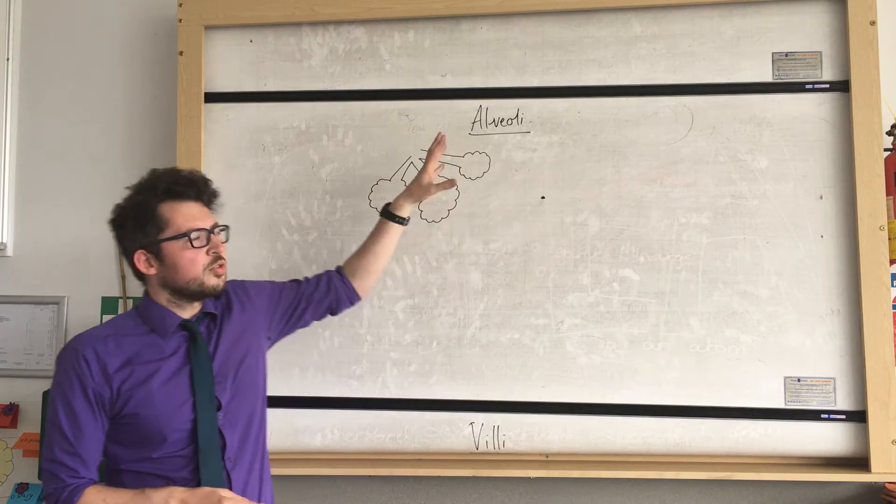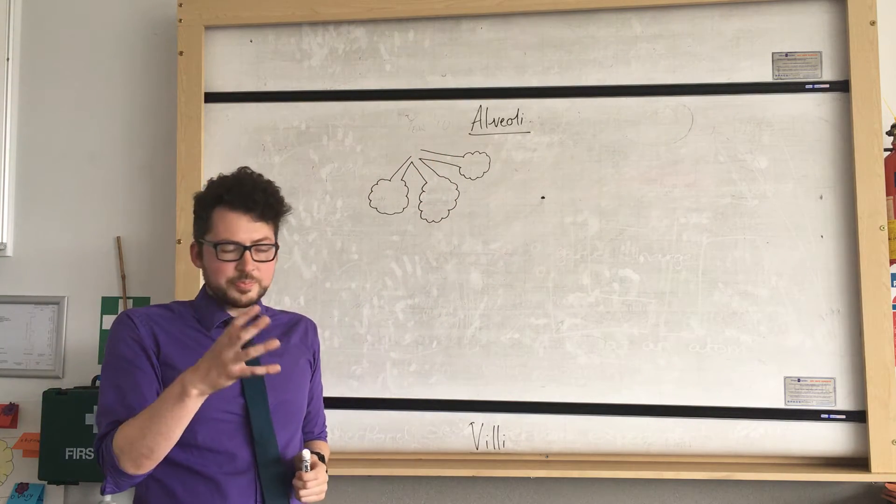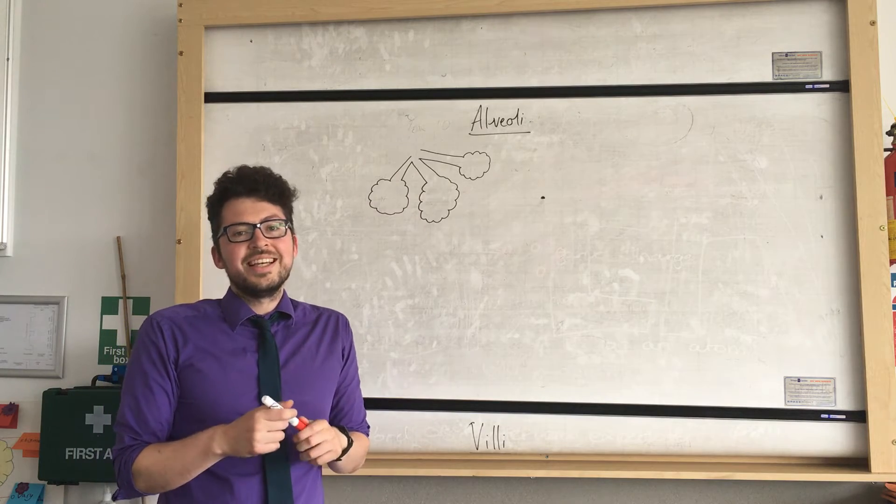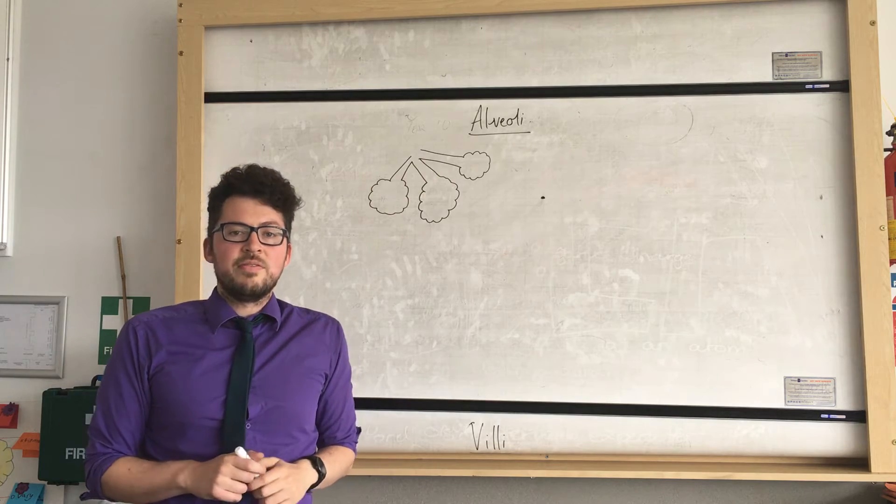So this diagram shows alveoli. They might draw them in an exam like this for you. In an exam they might also show them covered in blood vessels, so these could be surrounded by blood vessels. Watch out for that.